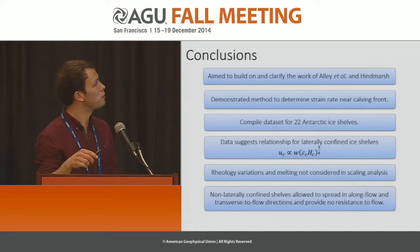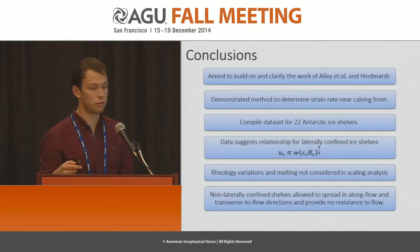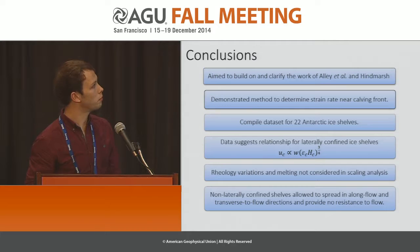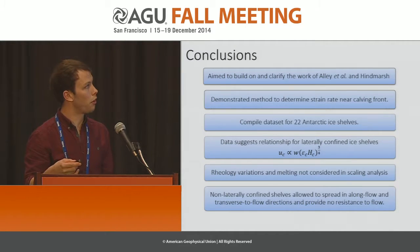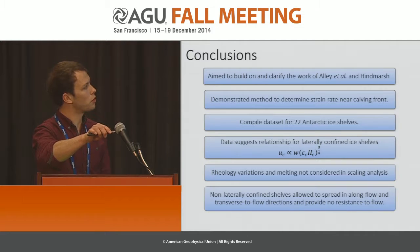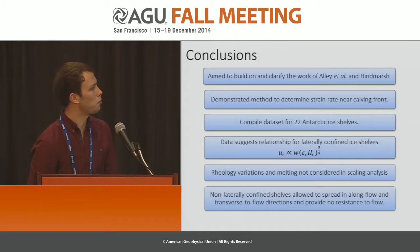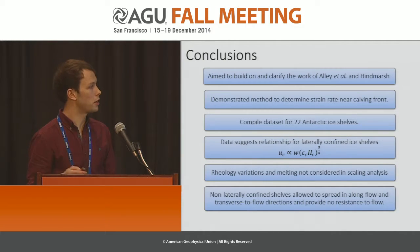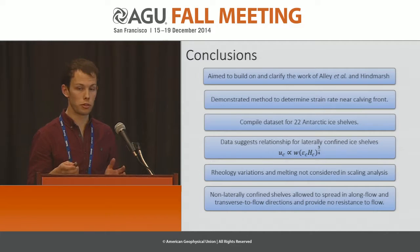To conclude, we aimed to build on and clarify the work of Alley et al. and Hindmarsh, investigating the flow dynamics of the calving front. We demonstrated a method to determine the strain rate near the calving front, and in doing so produced strain rate maps for 22 ice shelves, which could potentially be used to investigate features such as fracturing, crevasses, and features in the shear margins. This dataset has been compiled for 22 Antarctic ice shelves, and from the data we can see a relationship where the velocity of the calving front is proportional to the width multiplied by epsilon times H to the three quarters. Any variation in the data could be explained by rheology or melting not accounted for. This relationship breaks down for ice shelves that are not laterally confined, as they are able to spread in both the transverse and along-flow directions with no resistance provided by the sidewalls.